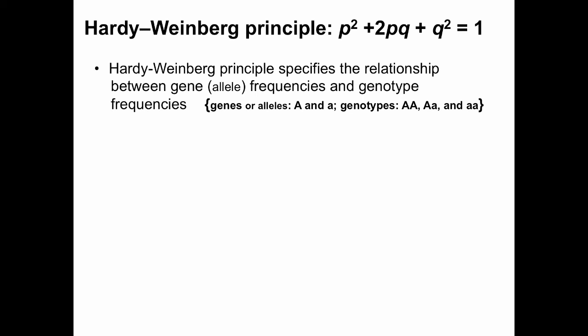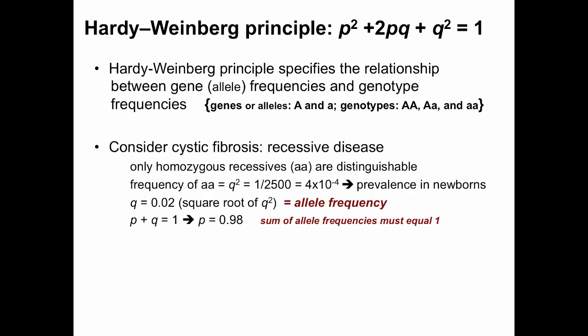The Hardy-Weinberg principle specifies the relationship between gene or allele frequencies and genotype frequencies. Consider cystic fibrosis — it's a recessive disease, so only homozygous recessives (little a little a) are distinguishable. The frequency of little a little a, or q², for cystic fibrosis is approximately 1 in 2500 in newborns. Taking the square root gives q, the allele frequency, which is 0.02.